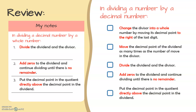Afterwards, we divide the dividend and the divisor. Then, we add zeros to the dividend and continue dividing until there is no remainder. And lastly, we put the decimal point in the quotient directly above the decimal point in the dividend.